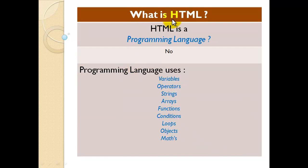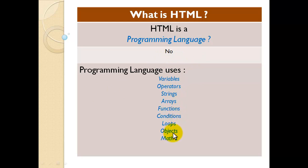Remember, what is HTML? HTML is not a programming language. Because programming languages have variables, operators, strings, arrays, functions, conditions, loops, objects, and maps — but HTML does not use these elements. So it is not a programming language.